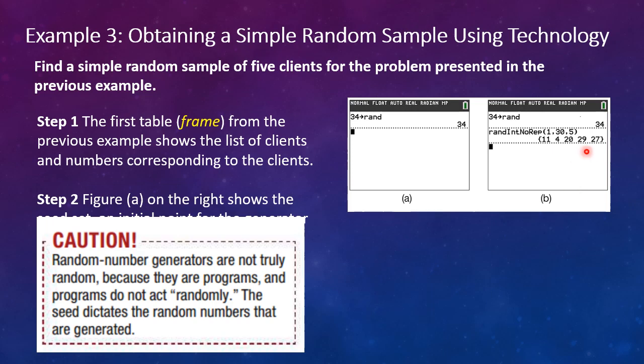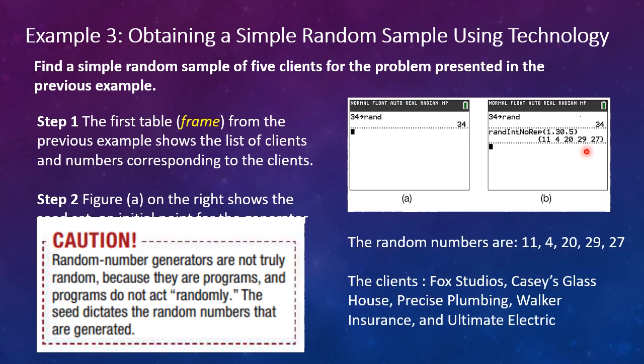Again, we've generated these numbers—11, 4, 20, 29, and 27—using our TI-84, and of course going back to our same frame, we see that the clients that we're going to send surveys to are Fox Studios, Casey's Glass House, Precise Plumbing, Walker Insurance, and Ultimate Electric.